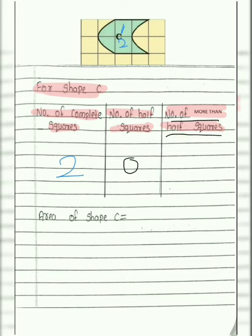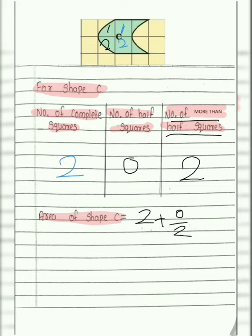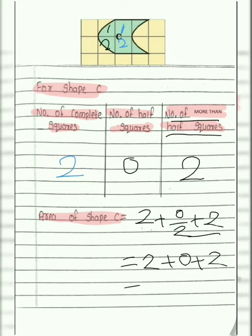Now, number of more than half squares. 1 and 2 — there are 2 more than half squares. We will write 2. Area of shape C equals number of complete squares plus number of half squares divided by 2, plus number of more than half squares. That is 2 plus 0 plus 2. So 2 plus 2 equals 4 square centimeters. Area of shape C is 4 square centimeters.